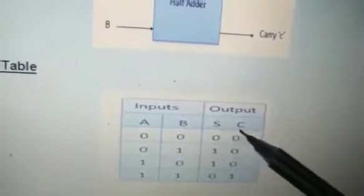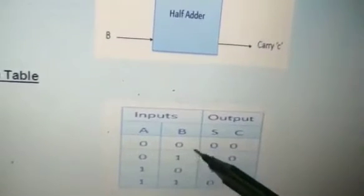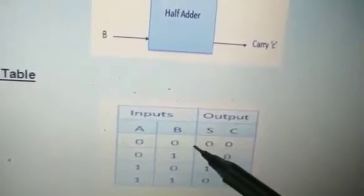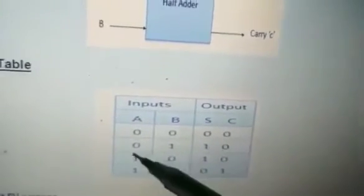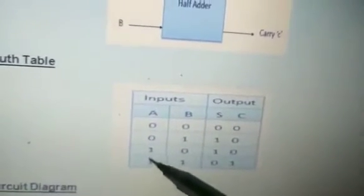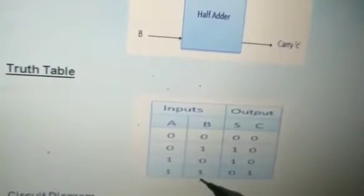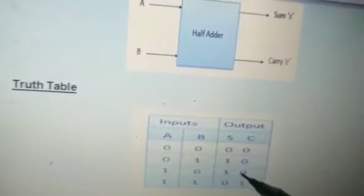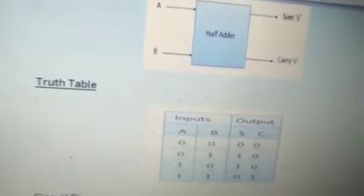With the help of the truth table: zero plus zero gives sum zero and no carry. Zero plus one gives sum one and no carry. One plus zero gives sum one and no carry. One plus one equals two in decimal, which in binary is ten — so we write zero in the sum part and one in the carry part. That is why we require two output channels: one for the sum part and another for the carry.